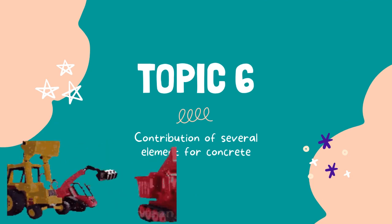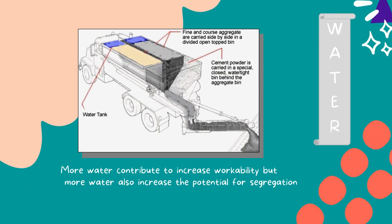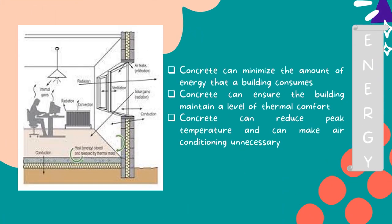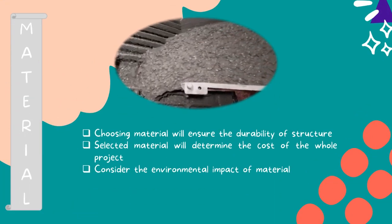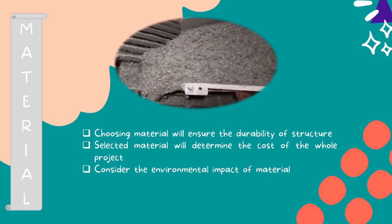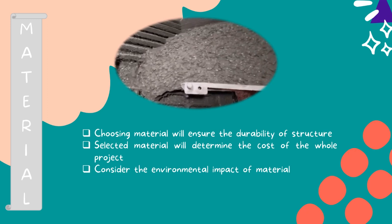We go to Topic 6, the contribution of several elements for concrete. Water: when using more water, it contributes to increased workability, but more water also increases the potential for segregation. That is why concrete from the cement plant has grades according to its use in construction. The lorry carrying cement must ensure the concrete brought to the construction area is still at the correct grade as ordered. Energy: concrete can minimize the amount of energy a building consumes, ensure the building maintains thermal comfort, reduce peak temperature, and can make air conditioning unnecessary. Material: we need to choose materials that will ensure the durability of the structure. The selected material will determine the cost of the whole project according to the grade of cement used, and we also need to consider the environmental impact of materials to maintain the structure of the building.